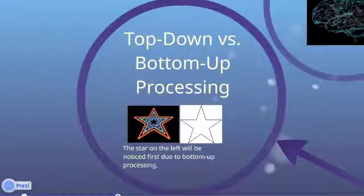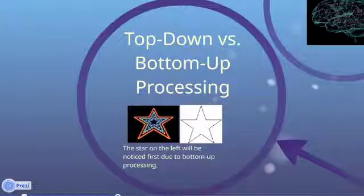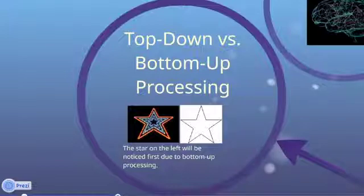Top-down processing occurs when knowledge controls what attention is focused on. It allows people to distinguish an object from a background, and can also bias people to look in places where something may appear. For example, if you were looking for a tennis ball, you would focus on color and look for yellow. Computational models of attention that rely on top-down processing allow a feature like color or shape to take priority over other features.